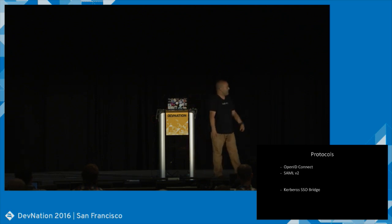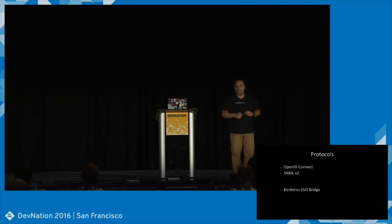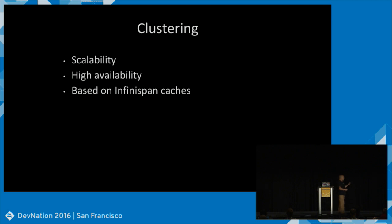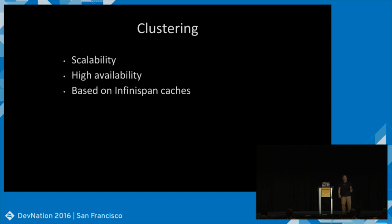Keycloak is built on top of JBoss EAP or Wildfly, but that's an implementation detail — it's not required to use it. Can you run it as its own server? It's a WAR file so you need some server to put it in, but it doesn't have to be the JBoss server; you can deploy the WAR to other things. I'm actually an OpenShift evangelist, not a JBoss person. I got excited about Keycloak when I started writing microservices and figured out how easy it was.